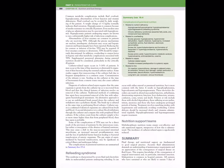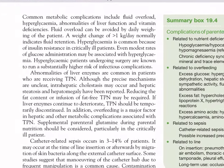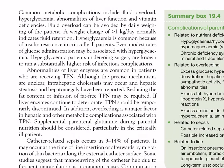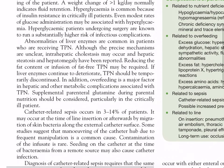Complications of parenteral nutrition: commencement of TPN may precipitate or accentuate underlying nutrient deficiency by encouraging anabolism. Common metabolic complications include fluid overload, hyperglycemia, abnormalities of liver function, and vitamin deficiencies. Fluid overload can be avoided by daily weighing — weight change of more than 1 kg per day normally indicates fluid retention. Hyperglycemia is common due to insulin resistance; even modest rates of glucose administration may be associated with hyperglycemia in critically ill patients, who are known to run a substantially higher risk of infectious complications.